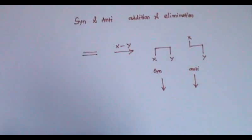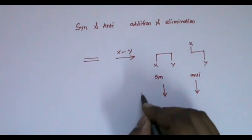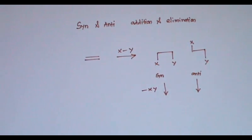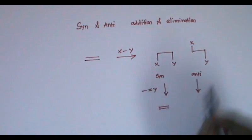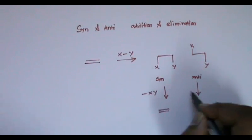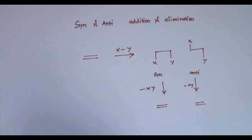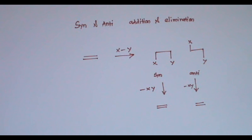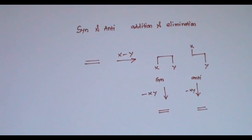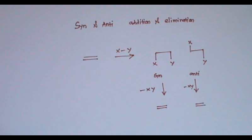Now, getting an olefin by removing XY: certain reactions will eliminate XY when X and Y are trans to each other — that is called anti elimination. On the other hand, in some cases elimination will take place only when X and Y are cis to each other — that is called syn elimination. Now let us go to syn addition.